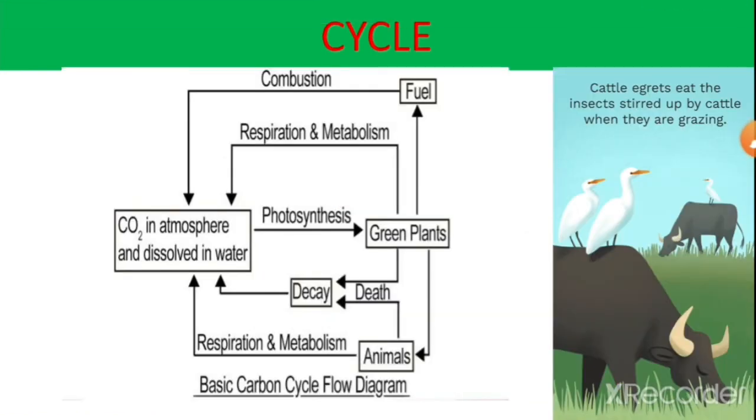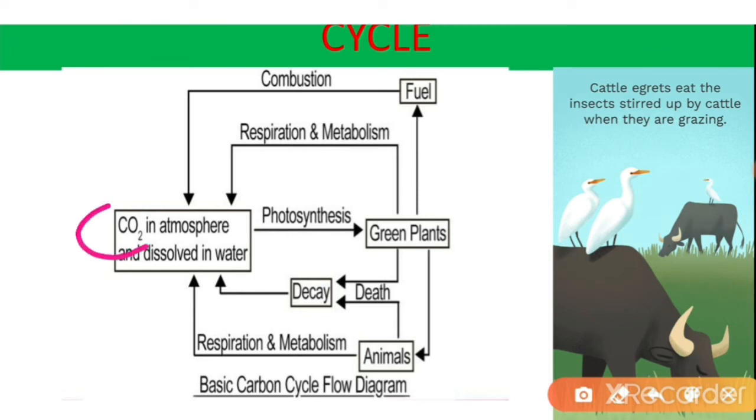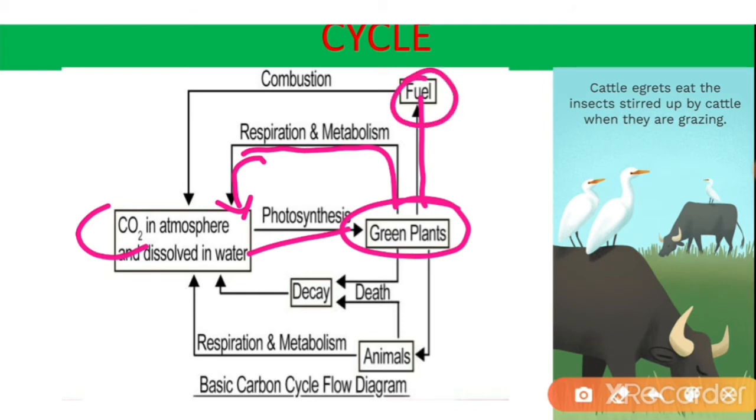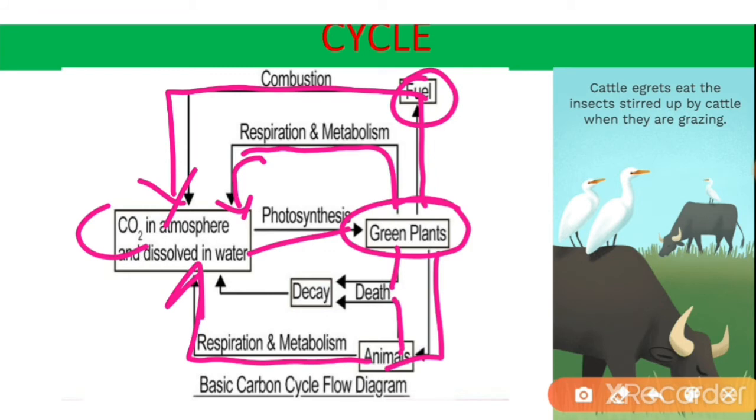This cycle is known as carbon cycle. First, CO2 in atmosphere and dissolved in water is taken by green plants by the process known as photosynthesis. During respiration and metabolism, CO2 is released back to atmosphere. Green plants are used in fuel and during fuel combustion CO2 is again produced. Animals eat the green plants and during respiration and metabolism, CO2 is released in atmosphere. When death of green plants and animals occur, there is decay or decomposition, and during decomposition CO2 is again released in the atmosphere.